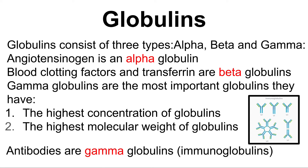Next, we have globulins, which consist of three types: alpha, beta, and gamma globulins. Angiotensinogen is an alpha globulin. Blood clotting factors and transferrin are beta globulins. Gamma globulins are the most important globulins — they have the highest concentration and the highest molecular weight of globulins. Antibodies are gamma globulins, which are immunoglobulins.